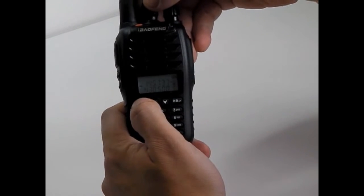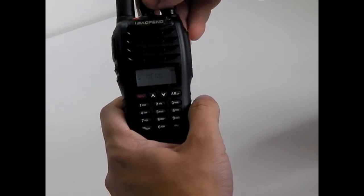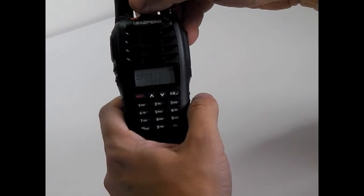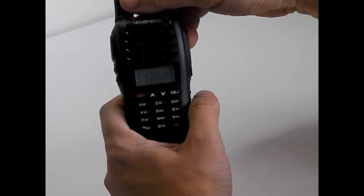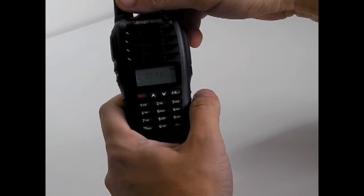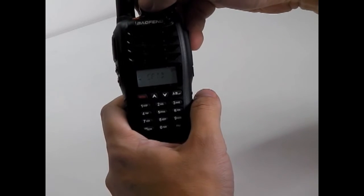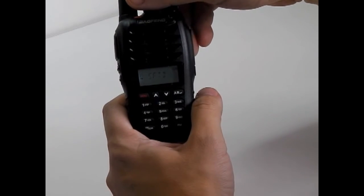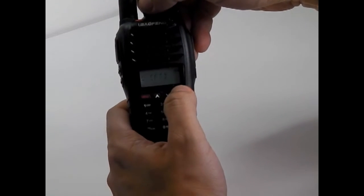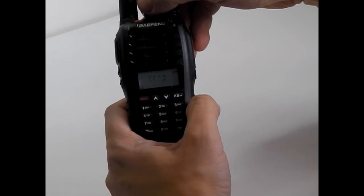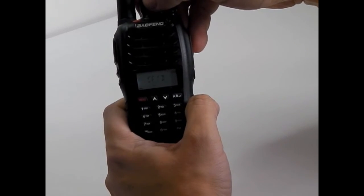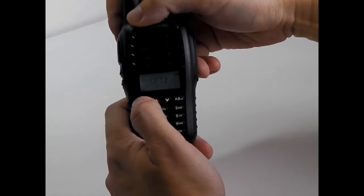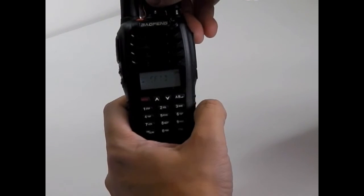Step two, press the menu key. Go to menu option 21 for the shift direction. Press A and B, change it to plus, zero, or minus. We're going to leave it on minus in our case, so it's going to shift down.